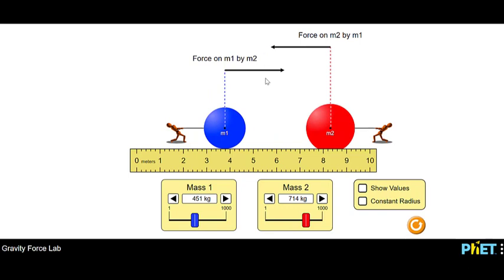So now you get a chance. You can play around with these. You can move them around, see what happens to the arrows. Change the masses, try to make these arrows as big as possible or as small as possible, and see how mass and distance affect the gravitational attraction between two objects. All right, have fun, and remember to always be clever.